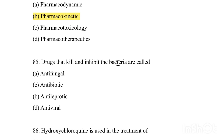Drugs that kill and inhibit bacteria are called: Option A: Antifungal. Option B: Antibiotic. Option C: Antipyretic. Option D: Antiviral. Answer is Option B, Antibiotic — drugs which kill bacteria are antibiotics.